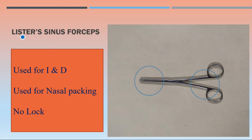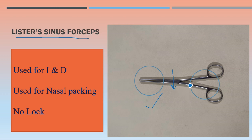The next important instrument is the Lister sinus forceps. Always pay attention to the name: Lister sinus forceps. Focus on the tip — you can see a long slender tip along with small serrations, the joint is visible, and importantly there is no lock here.